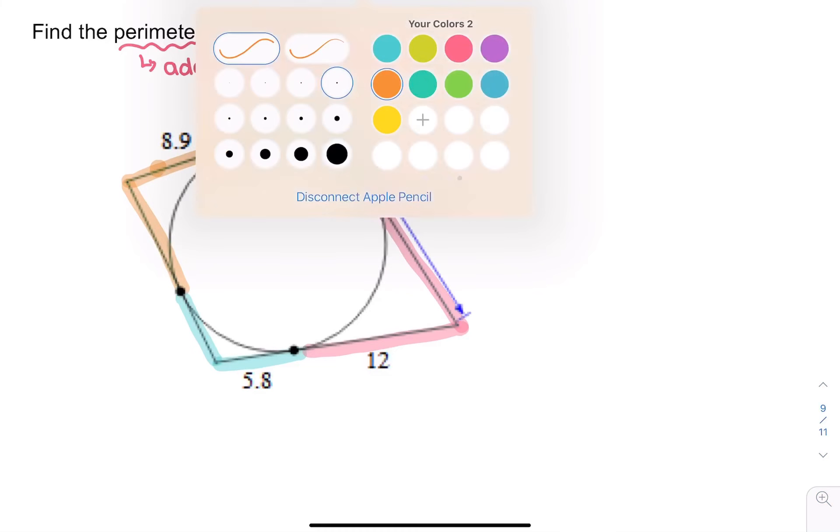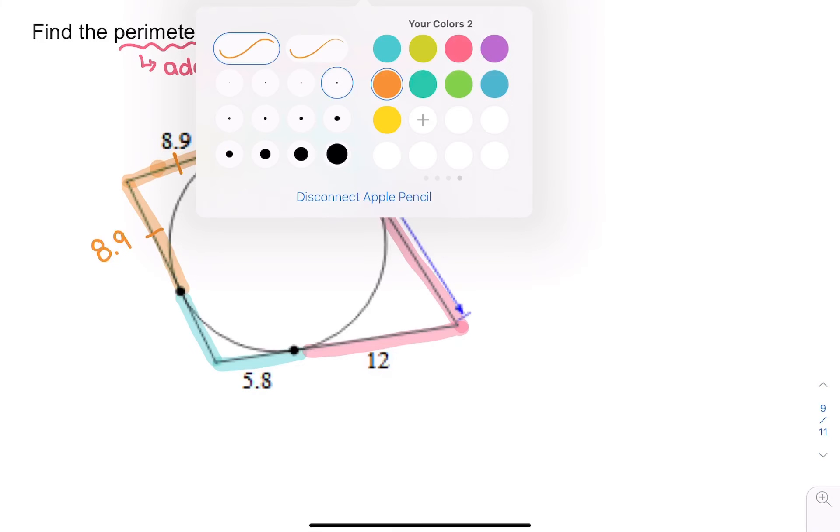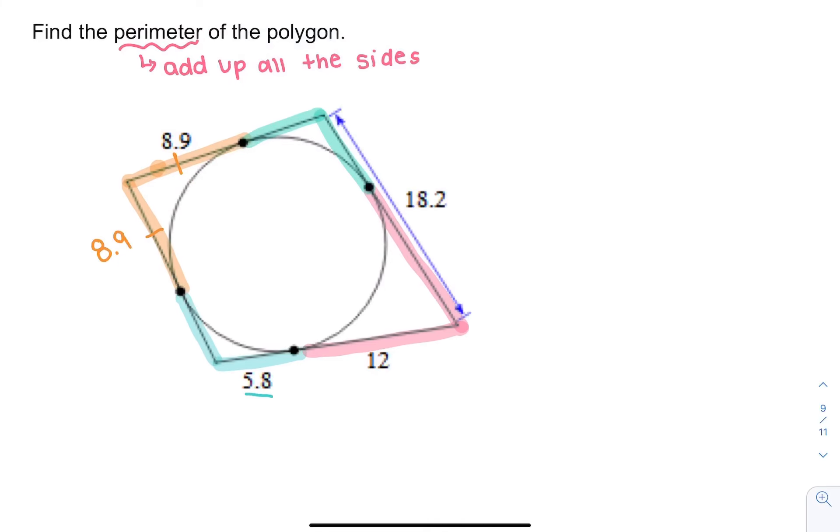Let's start with this orange one. These two are equal. If they're equal, then if that one's 8.9, this one's 8.9, but just the orange segment. Next up, 5.8 is this blue one down here. If this is equal, this one's equal. So this one's also 5.8.